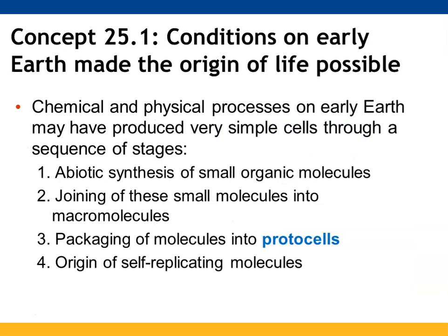Earth's early conditions made life possible. There were chemical and physical processes taking place that are thought to have produced very simple cells through several stages. First was producing small organic molecules abiotically. Step 2 was joining these molecules together into macromolecules. Step 3 was packaging these molecules into protocells, and step 4 was the origin of molecules able to replicate themselves.